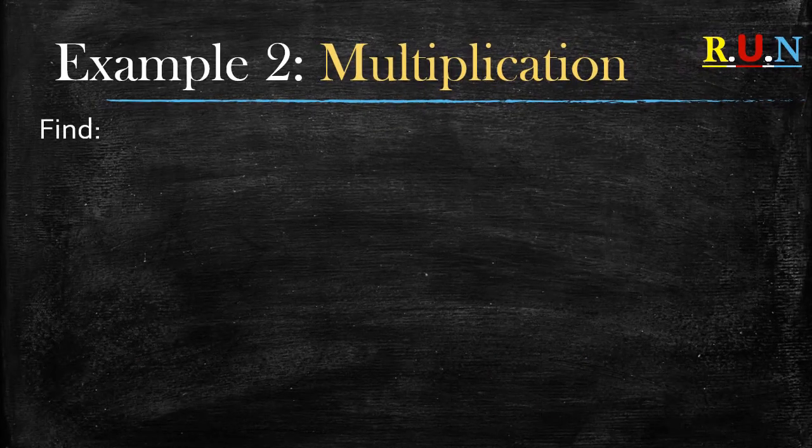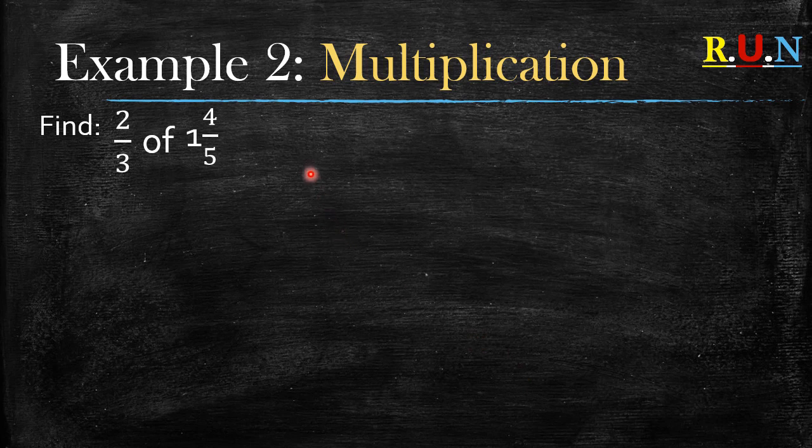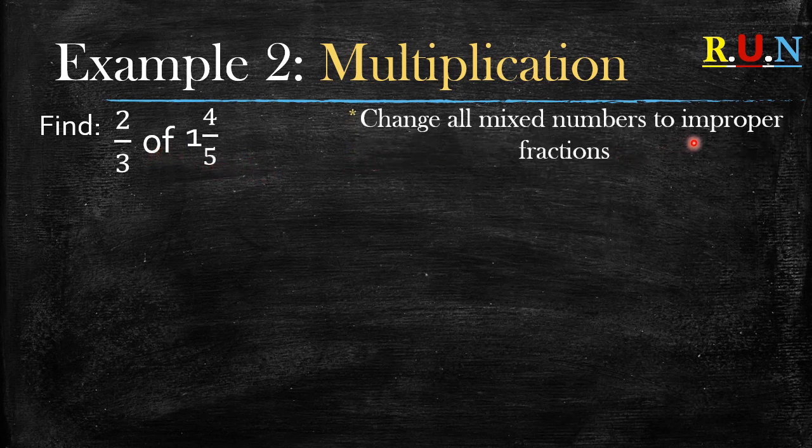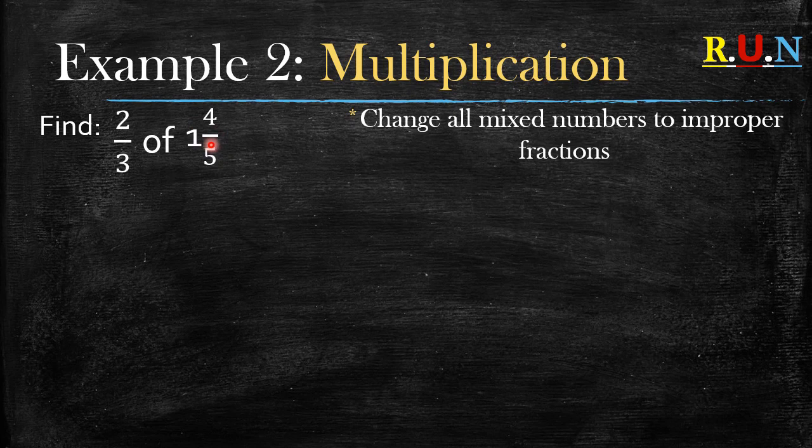Example number two: multiplication. Find two over three of one whole four over five. The moment you see 'of' it means it's multiplication. What do we do in this instance? We change all mixed numbers to improper fractions. Which one is a mixed number here? The second part of the question is a mixed number.